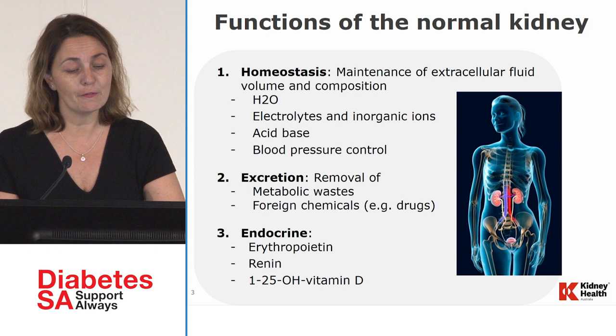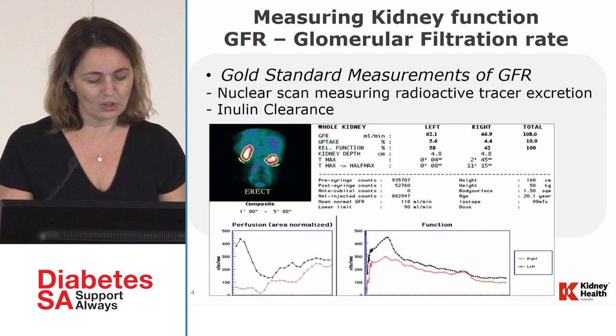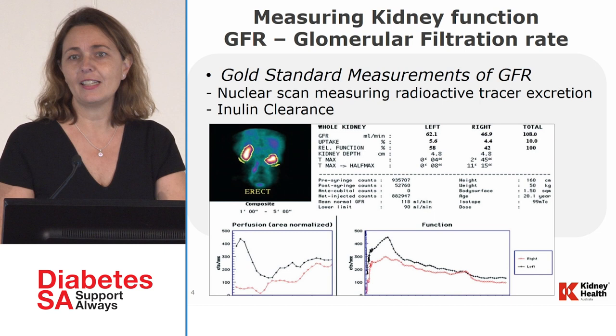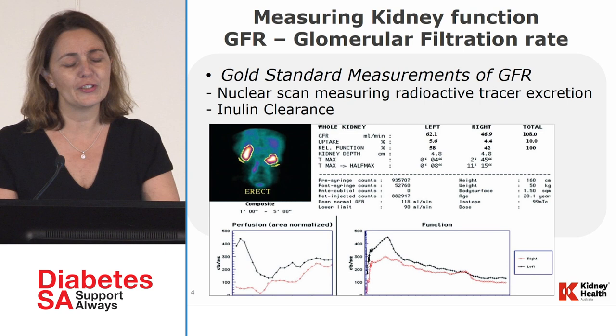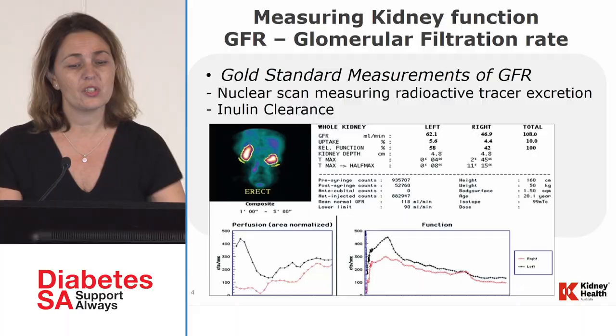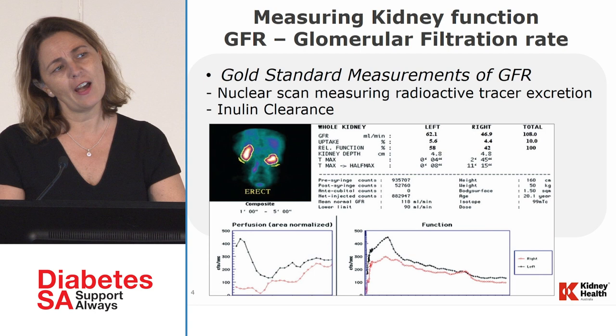How do we measure kidney function? There are a few gold standard ways. One is inulin clearance — we don't really use it in practice, but it's the best way to measure. Inulin comes from plants like garlic and onions, needs to be administered via cannula, and urine must be measured every one to two hours. It's not something we do in practice. Another method is a nuclear scan measuring radioactive tracer excretion, which we do pre- or post-transplant, but it's expensive and not practical clinically.